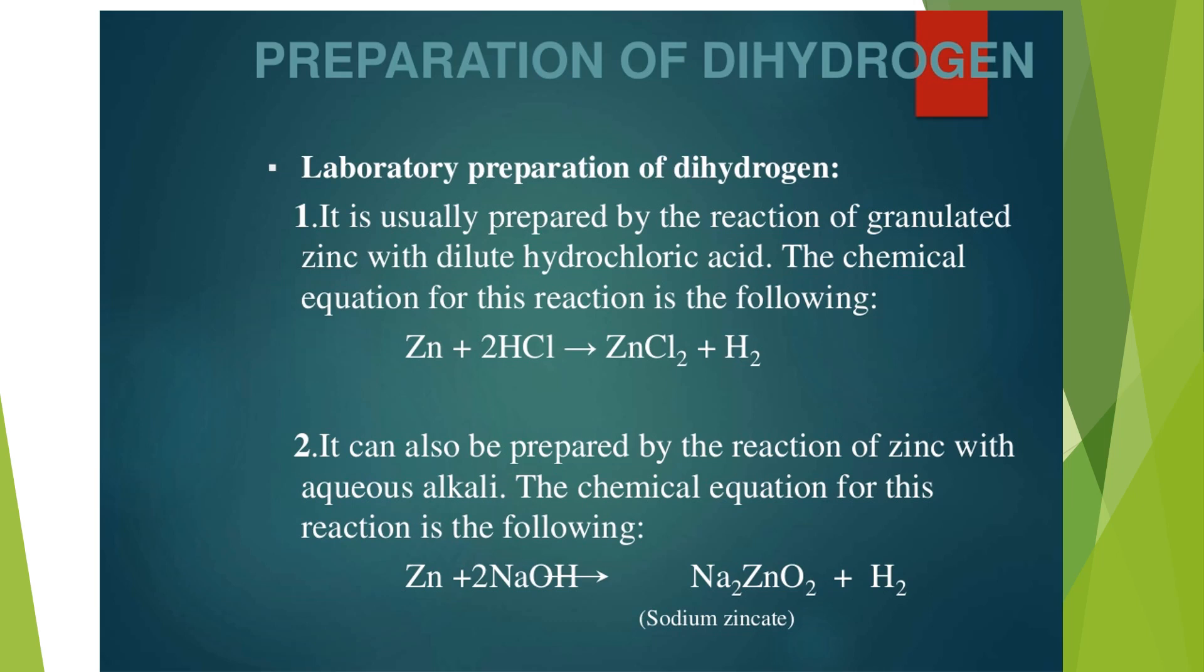Preparation of hydrogen: Laboratory preparation. It is usually prepared by the reaction of granulated zinc with dilute hydrochloric acid. The chemical equation for this reaction is: Zn plus 2HCl gives ZnCl2 plus H2.